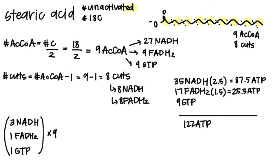But because we said it was unactivated, it requires 2 ATP to activate it. So we subtract 2 ATP at the end. Our final total is 120 ATP yielded from stearic acid.